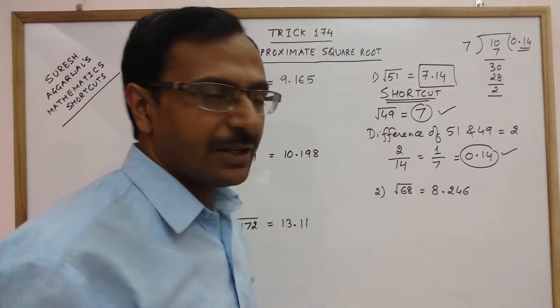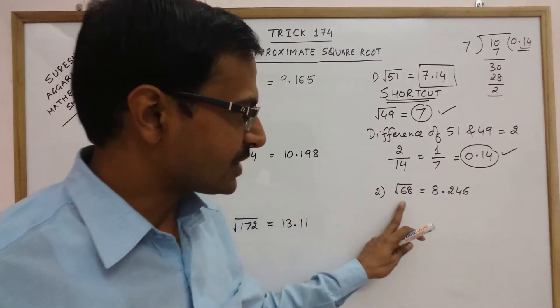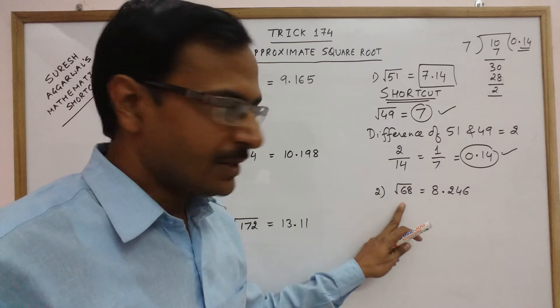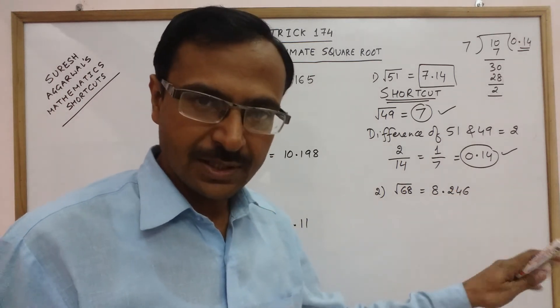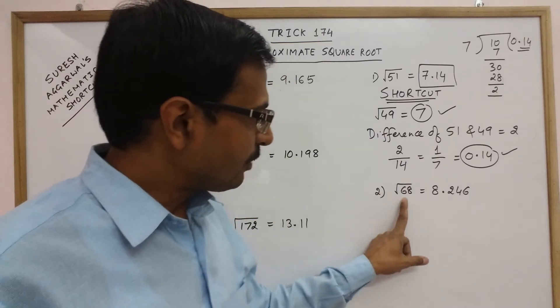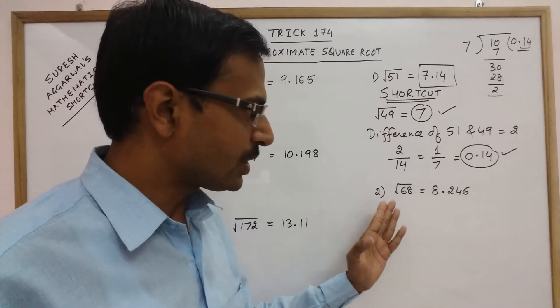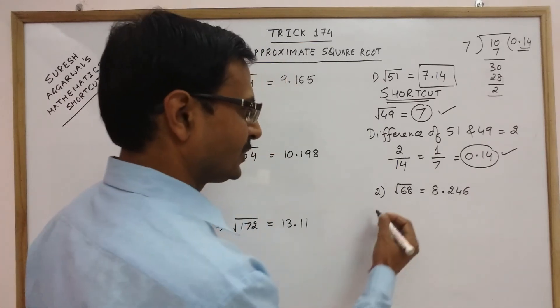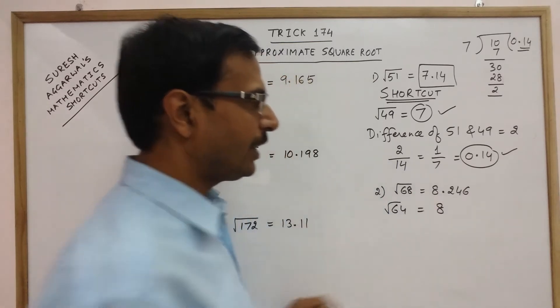To understand this method in a better way let us do one more question say we have square root of 68 now. The exact value of this square root is 8.246. Now let us try and obtain this. So which number below 68 is a perfect square. We have root 64. We have root 64 as 8. So our first part is obtained 8.